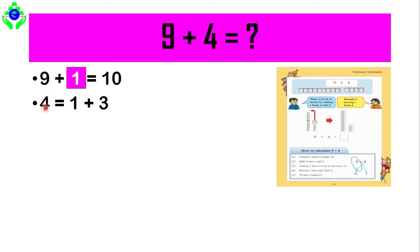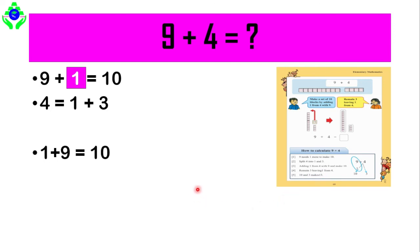Step 3: add 1 from the 4 with 9 to make 10, so 1 plus 9 equals 10. Step 4: 3 remains after leaving 1 from 4. We add this remaining 3 with the 10, and finally 10 plus 3 equals 13. I think you can understand this question now.